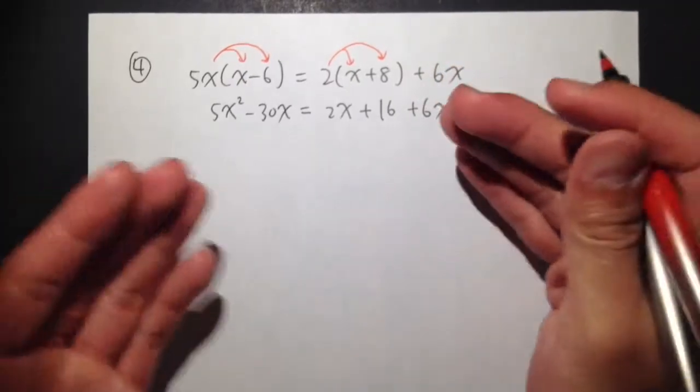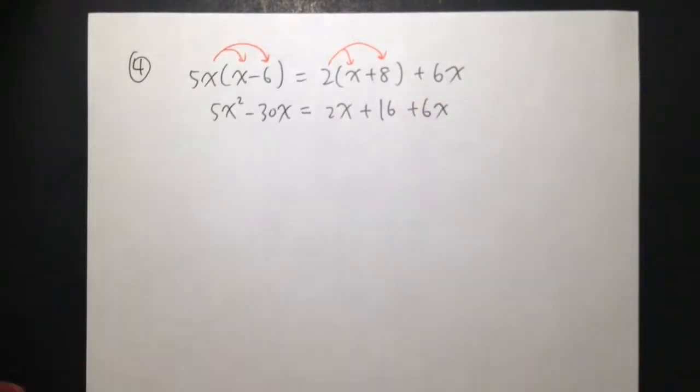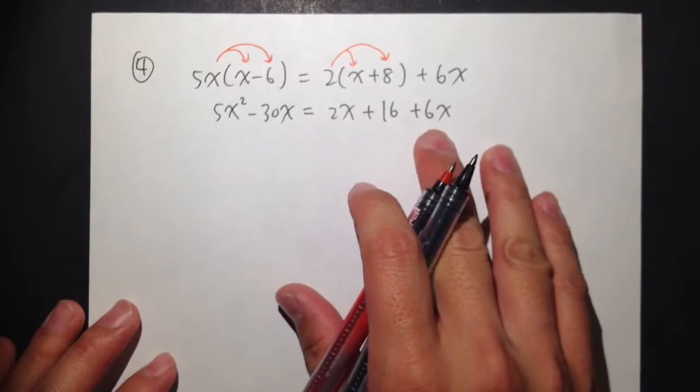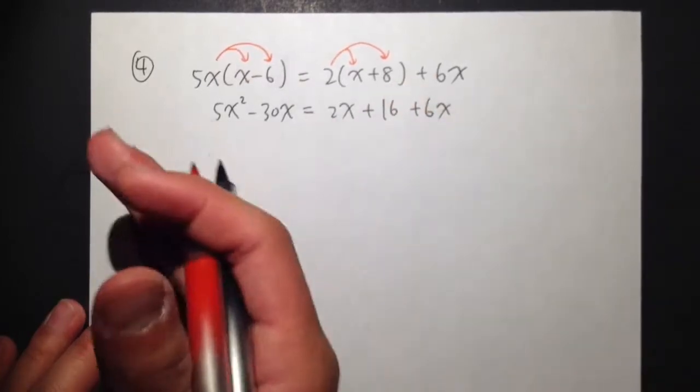Then, our goal is to get one side equal to 0, and then so that we can try to factor the other side. Let's combine items here, and then collect everything to the left-hand side.